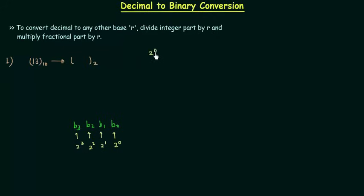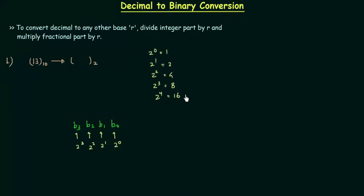2 raised to power 0 is equal to 1, 2 raised to power 1 is equal to 2, 2 raised to power 2 is equal to 4, and 2 raised to power 3 is equal to 8. We can also have 2 raised to power 4 equal to 16, but we do not require it because our decimal number is 13, and 16 is greater than 13. Out of 1, 2, 4, 8, the number closest to 13 is 8, so we can write 13 equals 8 plus 5.